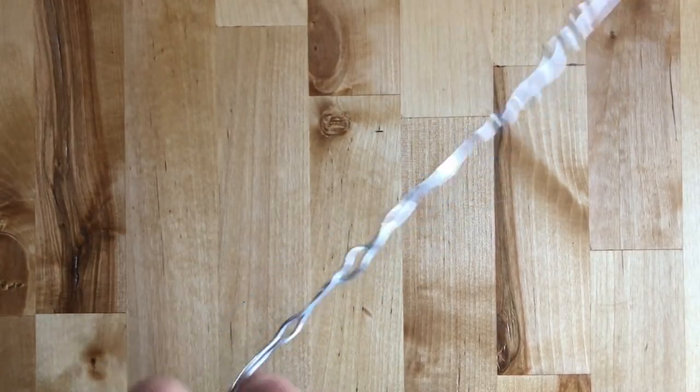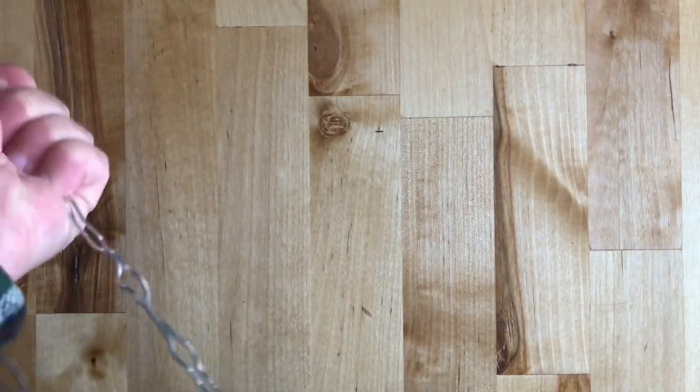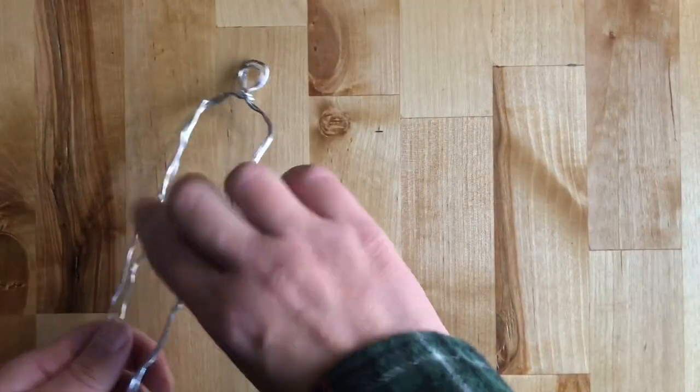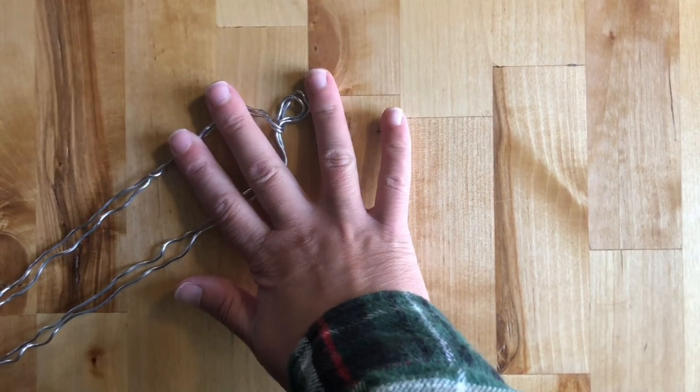Then you're gonna use two fingers to form the shoulders. So you're gonna pull down away and then pull up towards the head, in opposite directions, to create the forming of those shoulders.